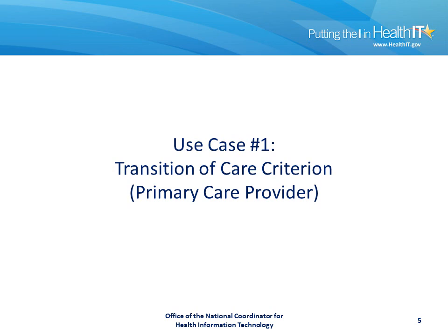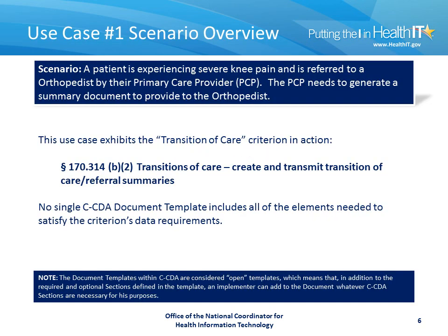Let's walk through an example of how you might want to pursue the Transitions of Care criterion. In this scenario, a patient is experiencing severe knee pain and is referred to an orthopedist by their primary care provider, or PCP. The PCP needs to generate a summary document to provide to the orthopedist. No single Consolidated CDA document template inherently includes all of the elements necessary to satisfy the criterion's data requirements. It's also worth noting that document templates within Consolidated CDA are considered open templates, meaning implementers can add whatever Consolidated CDA sections are necessary for their purposes.